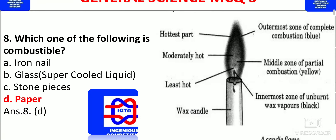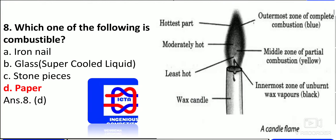Which one of the following is combustible? An iron nail is not a combustible one. Glass is a super-cooled liquid and is also non-combustible. A stone piece is also non-combustible. Paper, on the other hand, is combustible.